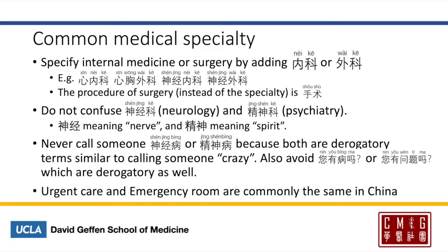Another distinction between the specialties is 内科 and 外科 — 内科 meaning internal medicine or medical specialties, and 外科 meaning surgical specialties. So for example, 心内科 will be cardiology, 心胸外科 will be cardiothoracic surgery, 神经内科 is neurology, and 神经外科 is neurosurgery.